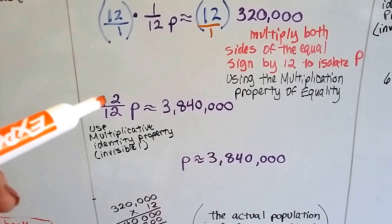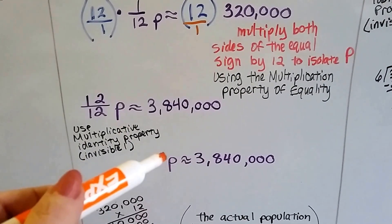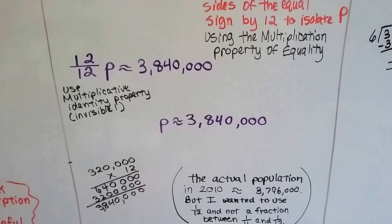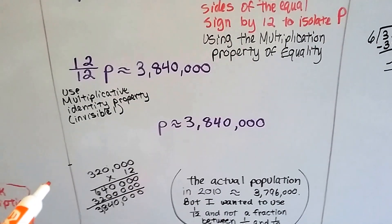It's the multiplicative identity property, and the 12 over 12 is 1. 1 times P is just the P. And we've got our answer. P is approximately 3,840,000.